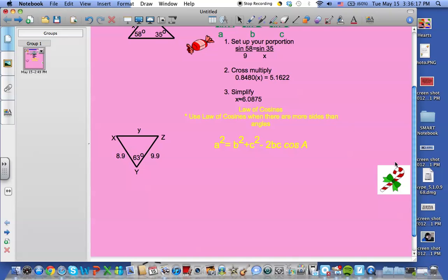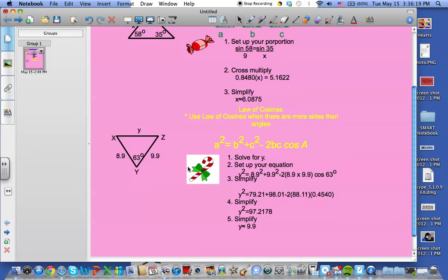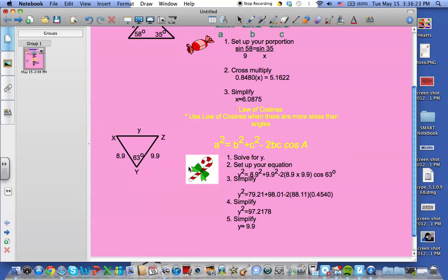So let's show you an example of this on the triangle on the left. We should solve for y, and to set up our equation, we do y squared is equal to 8.9 squared plus 9.9 squared minus 2 times 8.9 times 9.9 times the cosine of 63. After you simplify and use the cosine, y turns out to be about 9.9.